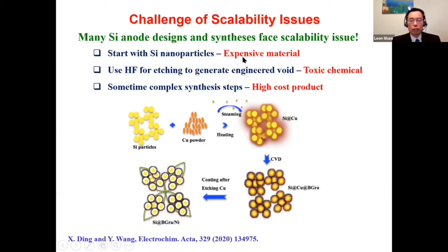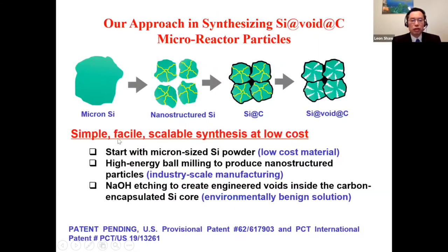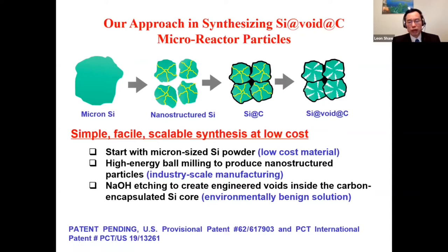We introduce a very simple, facile, scalable synthesis method that results in very low-cost material. We start with high-energy ball milling of commercial silicon powder, so our starting material is low cost. This produces large quantities of nanostructured silicon particles, and since high-energy ball milling is an industry-scale manufacturing method for nickel superalloys, our process is industrially scalable.